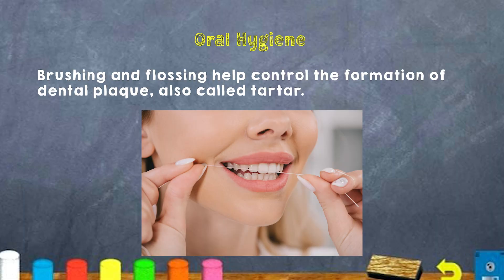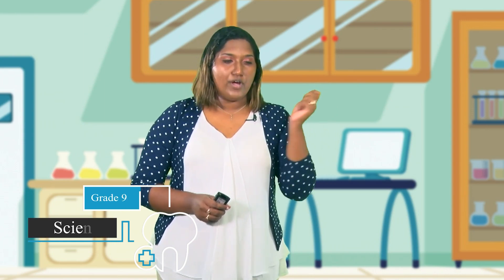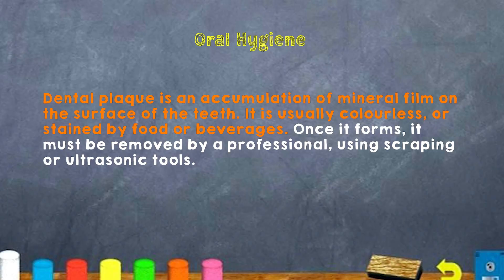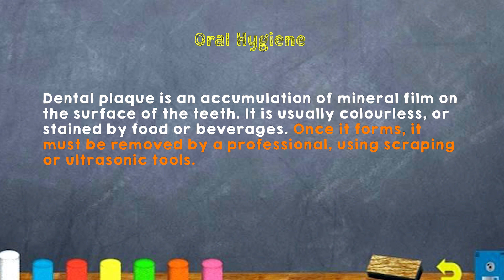Brushing and flossing helps control the formation of dental plaque, also called tartar. Have you ever noticed at the corners of your teeth there's some yellow substance that sometimes won't go away no matter how much you brush? That buildup cannot be removed just by brushing. That is plaque, and to remove it, it's recommended to see a dental practitioner. Dental plaque is an accumulation of mineral film on the surface of the teeth. It is usually colorless or gets stained by food or beverages. Once it forms, it must be removed by a professional using a scraping technique.